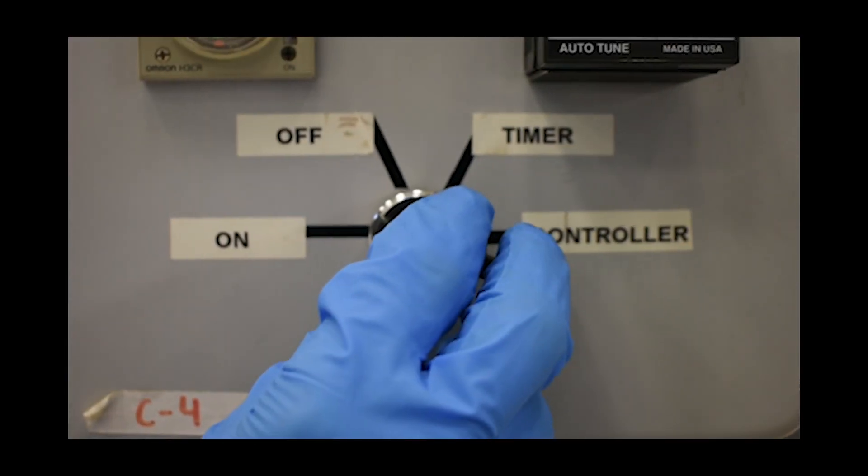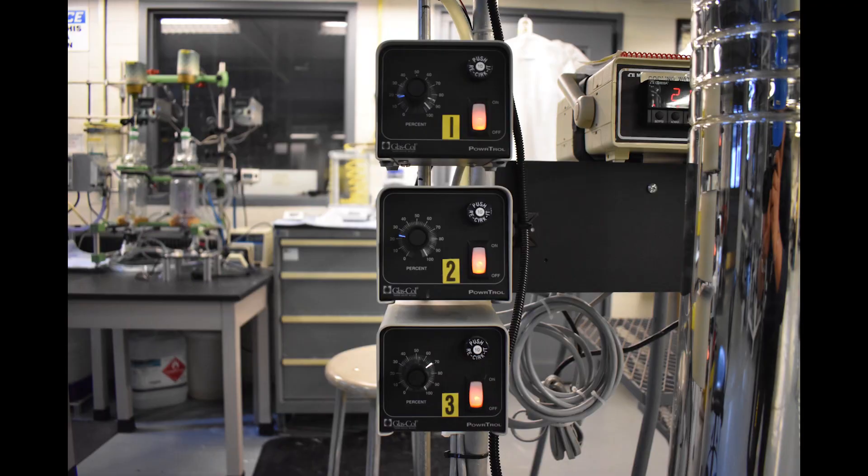Before turning on the heaters, make sure the column is going to be operating at total reflux by setting the control panel to off using the dial on C4. Now you can turn on the heaters.